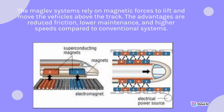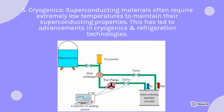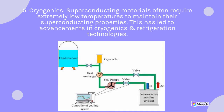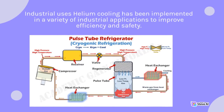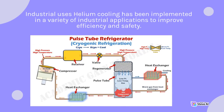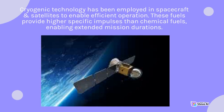Cryogenics: superconducting materials often require extremely low temperatures to maintain their superconducting properties. This has led to advancements in cryogenics and refrigeration technology. Helium cooling has been implemented in a variety of industrial applications to improve efficiency and safety. Cryogenic technology has also been employed in spacecraft and satellites to enable efficient operation, with cryogenic fuels providing higher specific impulses than chemical fuels, enabling extended mission durations.